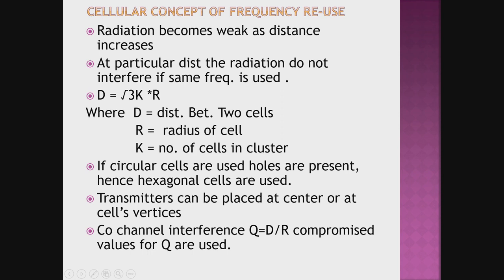As the tower is situated at the center of the cell, the radiation becomes weak as the distance increases. At a particular distance, the radiation does not interfere if the same frequency is not used. This distance is given by d = √(3 × k × r), where d is the distance between two cells, r is the radius of the cell, and k is the number of cells in a cluster. If circular cells were used, holes would be present and communication would fail. Therefore, hexagonal cells are preferred.